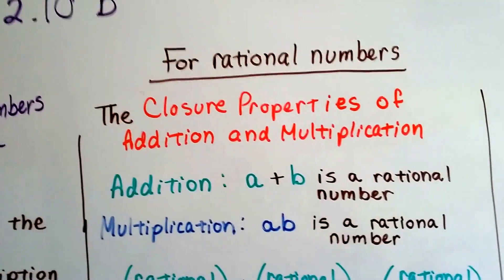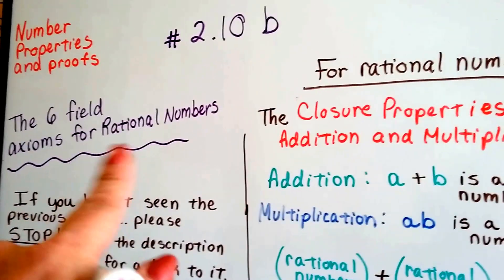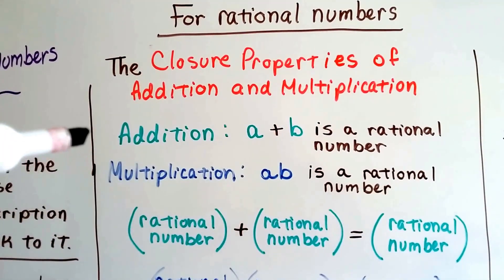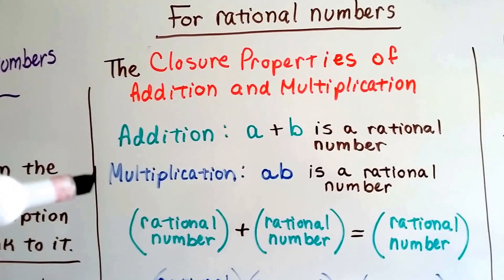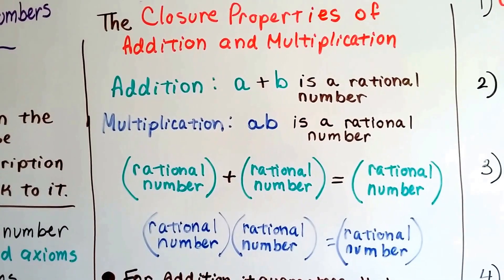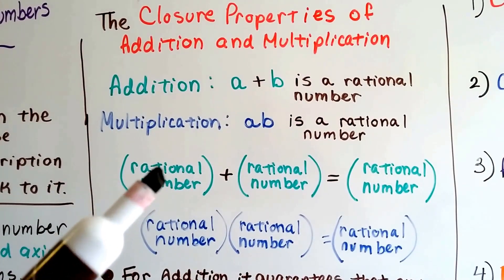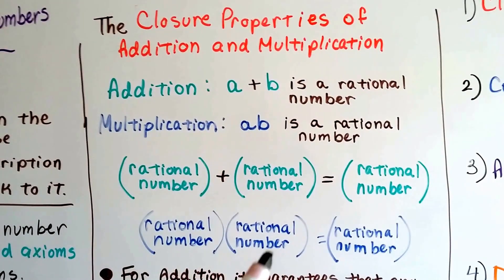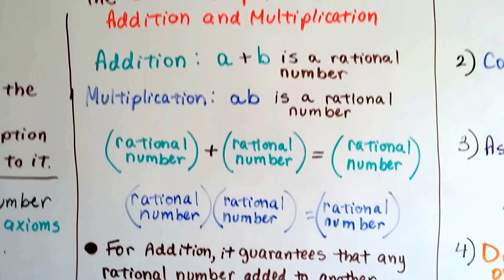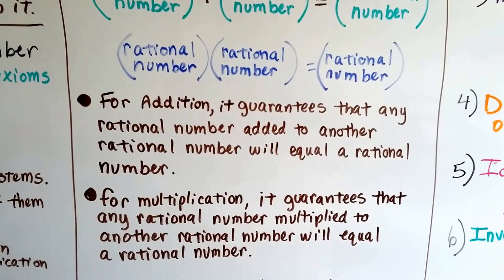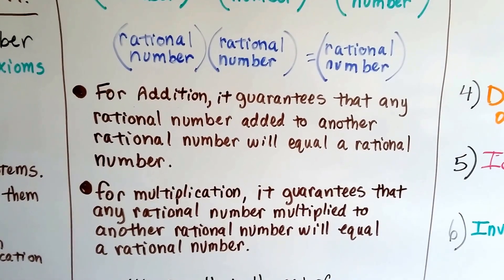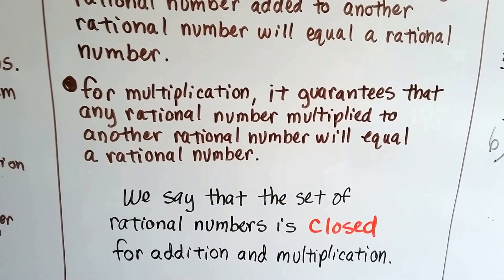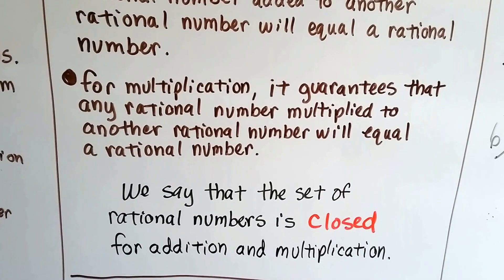So, this is for rational numbers. For rational numbers, the closure properties of addition and multiplication: for addition, a plus b is a rational number, and for multiplication, a times b is a rational number. It means that if you add a rational number to a rational number, you're going to get a rational number. And if you multiply a rational number by a rational number, you'll get a rational number. It guarantees that any rational number added to another one equals a rational number, and any rational number multiplied by a rational number equals a rational number.